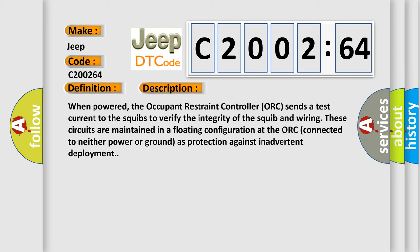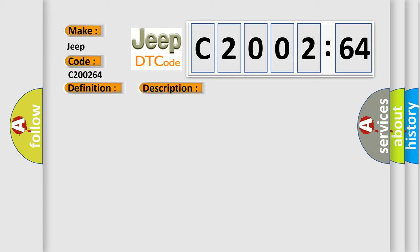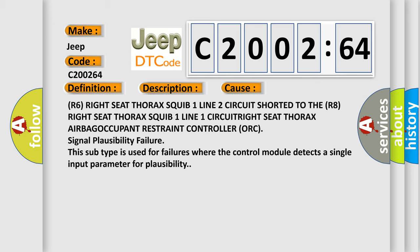This diagnostic error occurs most often in these cases: R6 right seat thorax squib one line two circuit shorted to the R8 right seat thorax squib one line one circuit, right seat thorax airbag occupant restraint controller ORC signal plausibility failure. This subtype is used for failures where the control module detects a single input parameter for plausibility.